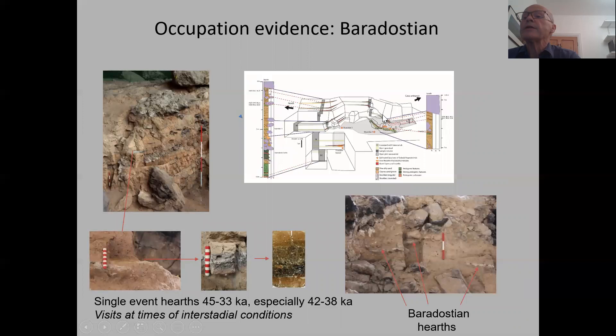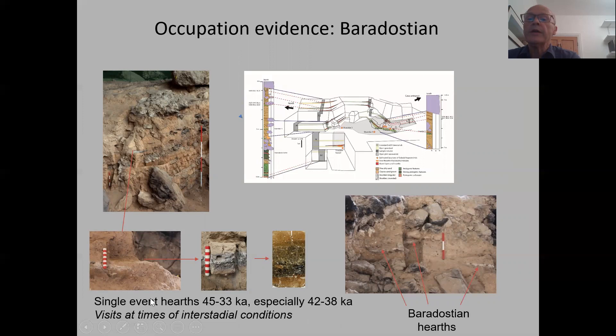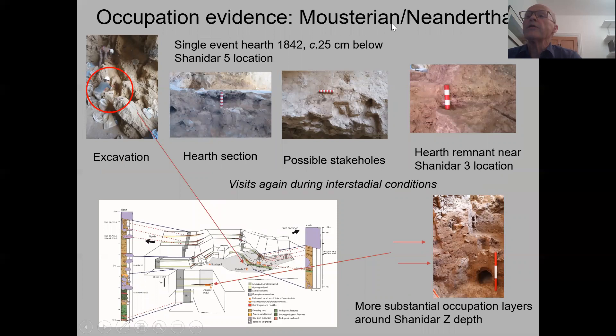These are our column samples that we've excavated — the Shanidar 5 location, the Shanidar 4 location, and where we've reached at the base. The Baradostian occupation evidence consists of small hearths: thin ash layers that micromorphology shows are single-event hearths, producing radiocarbon dates mostly 42,000 to 38,000 years ago, with wider brackets of 45,000 to 33,000. The botanical evidence within them in the micromorphology sections shows visits during interstadial conditions.